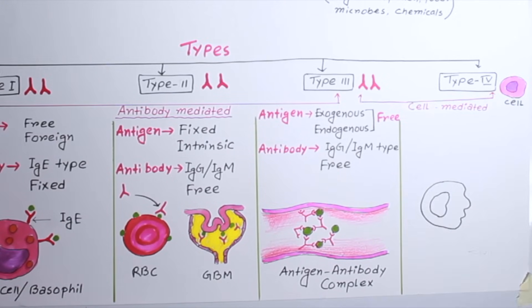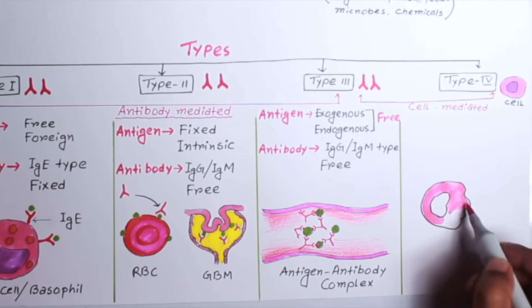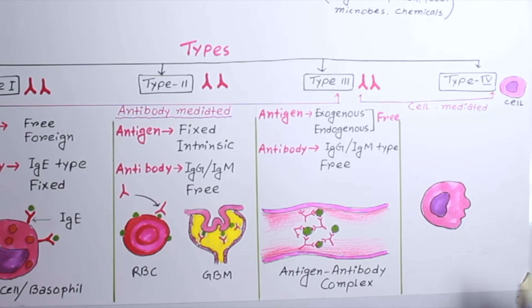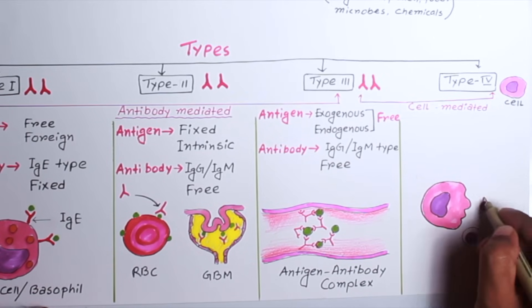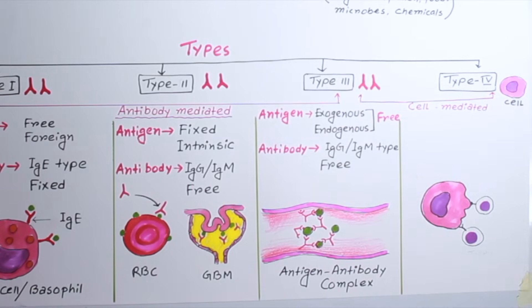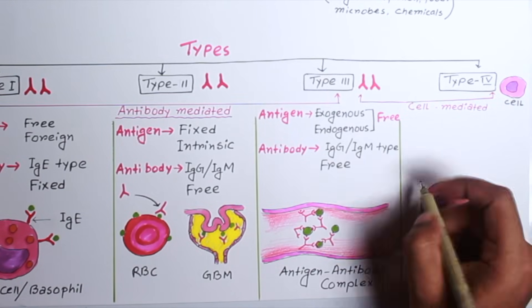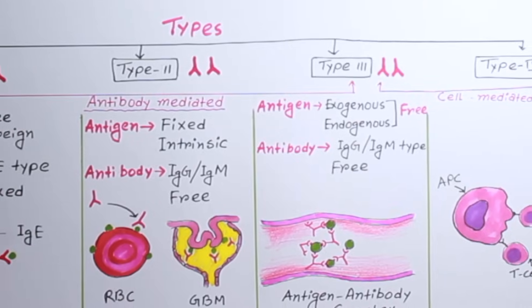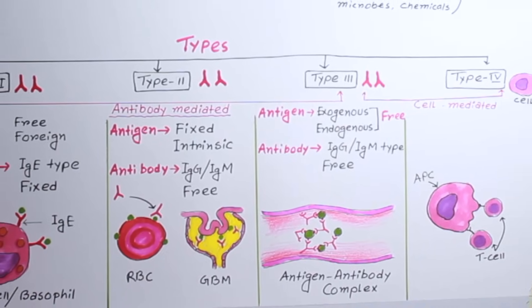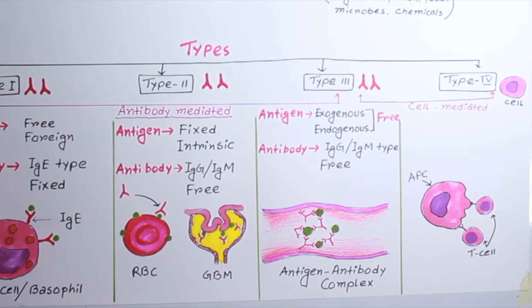Lastly, Type 4 hypersensitivity reaction. The reaction is little bit different. They don't involve any antibodies. Some immune cells like antigen presenting cells, T cells are involved in this reaction. That's why Type 4 hypersensitivity is called cell mediated hypersensitivity reaction.